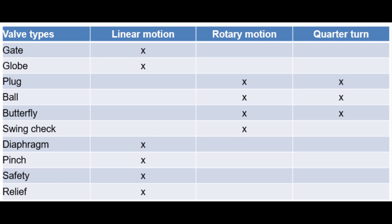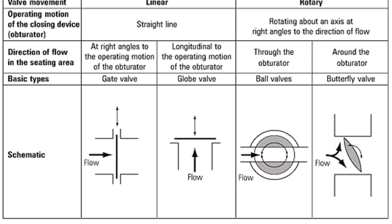Referring to the classification table: gate valves, globe valves, diaphragm, pinch valves, safety valves, and relief valves are classified as linear motion. Plug, ball valve, butterfly valve, and swing-check type valves are classified as rotary motion valves. As shown in the schematic, in linear motion valves flow is directional — either straight or upward — while in rotary valves the fluid travels along an angular path.